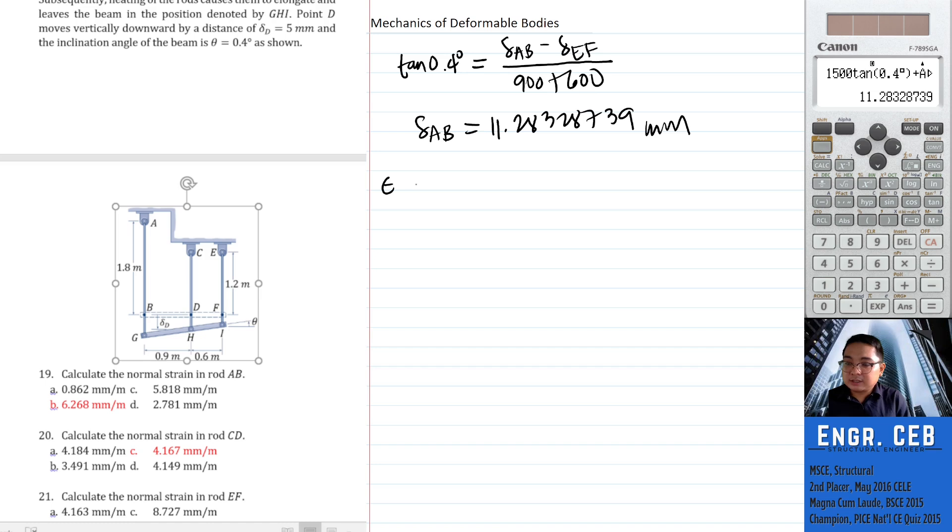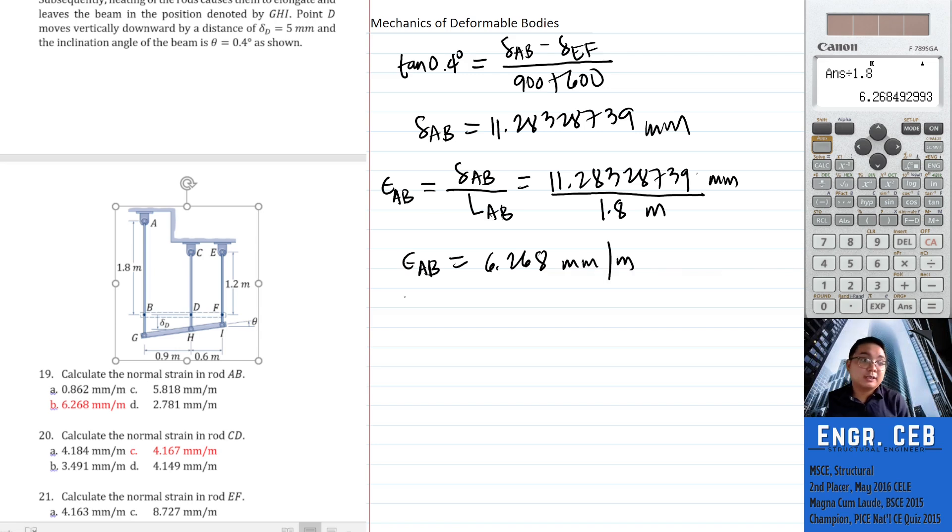In getting the strain, we just take the ratio. For number 19, the normal strain in rod AB is simply the deformation over the original length of AB. Actually, normal strain has no units, but according to the choices, they put units - millimeter per meter. It's like the units cancel because millimeter and meter are both units of length. But to follow the prescribed units, we divide the deformation by the corresponding length. The length of AB in meters is 1.8, millimeter then meter. Don't convert the meter because the required unit is millimeter per meter. So that is 6.268 millimeters per meter. That is letter B.